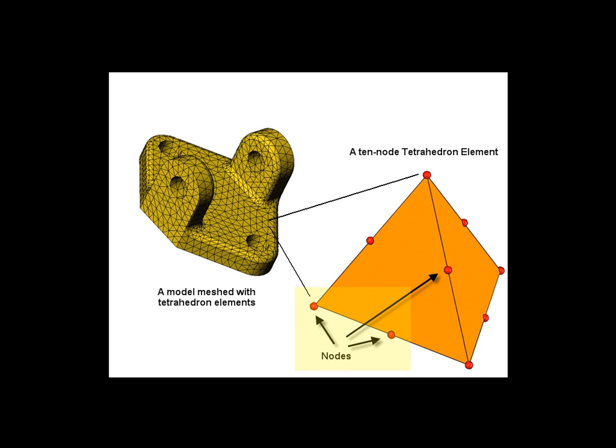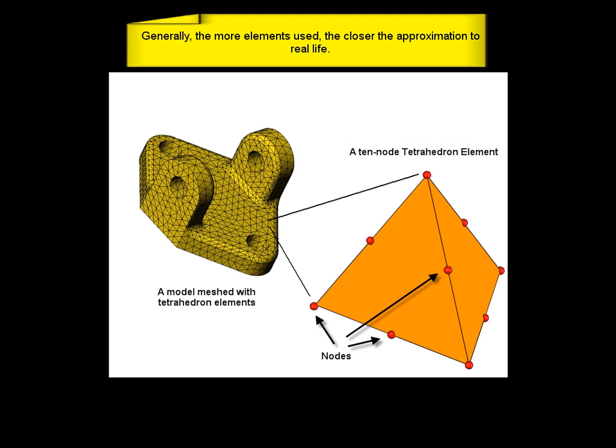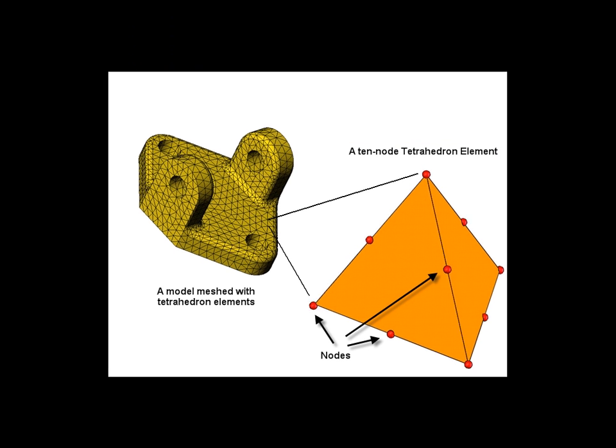The elements have nodes on them used to connect to other elements and transmit loads. Simulation uses these tetrahedron shaped elements for the solid body models. Generally speaking, the more finite elements in a given volume, the closer the approximation to real life.